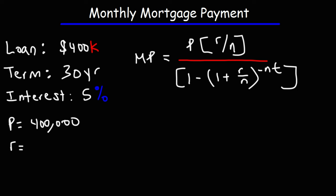R is the annual interest rate, which is 5%. But we need to convert that to a decimal. So if you take 5% and divide it by 100, this is going to be 0.05. So that's the value we need to plug in for R.